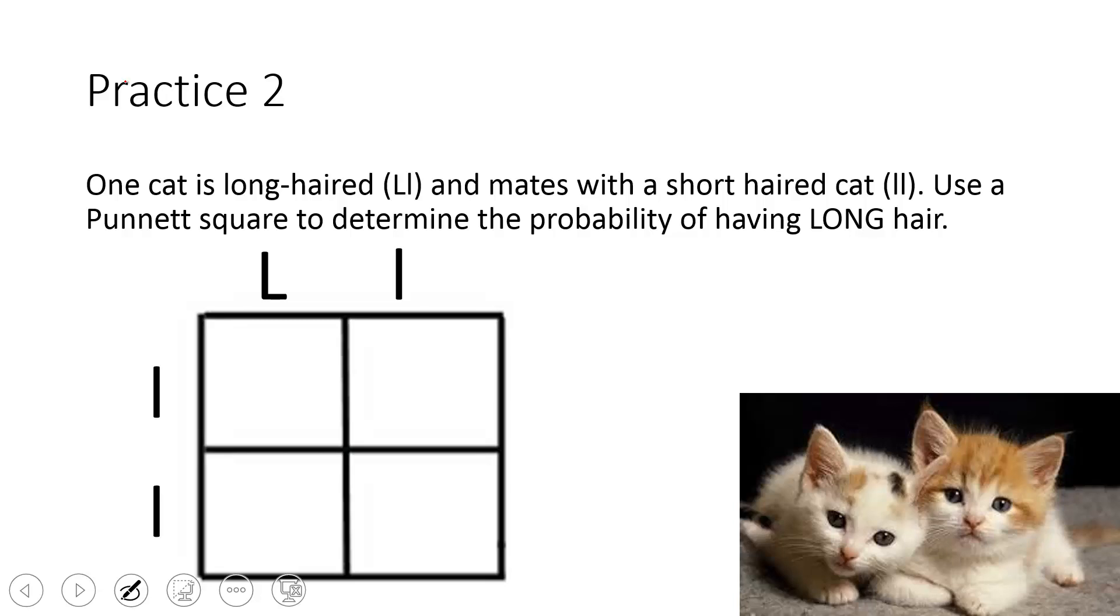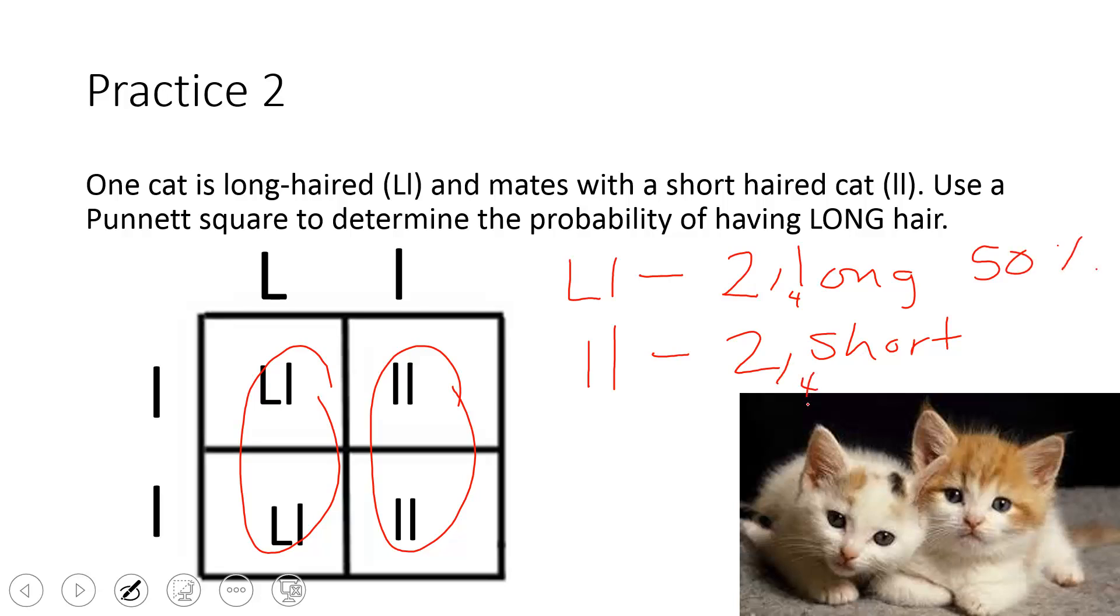You should have set up your Punnett square to look like this. The parent should go on the top and on the left-hand side. Your answers should be like this inside the box with the genotypes. And then you should have figured out there's two that are LL and two that are lowercase, lowercase. Which means that I have two that are going to have long hair. And then I have two that are going to have short hair. If I convert that to a percent, two out of four is the same thing as 50%. And then two out of four, again, is the same thing as 50%. So they have a 50% chance of having long hair, and the cats have a 50% chance of having short hair.